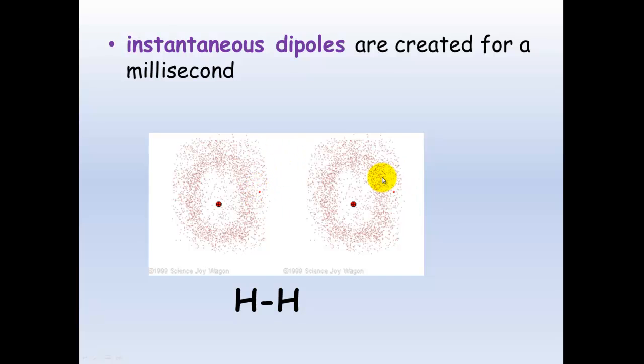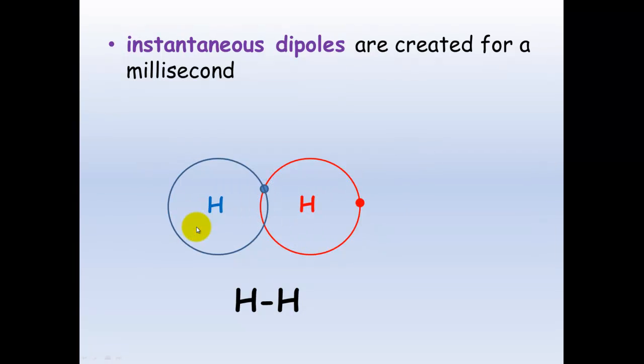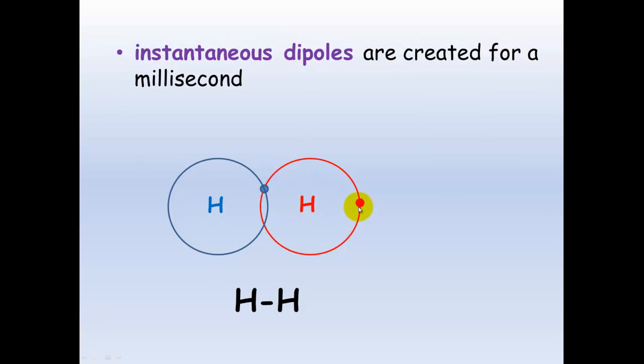Which means that the negative is on this side of the molecule, which creates a very slight positive on this side of the molecule. And this is what we're talking about. We've got the electrons on this side here, which creates a delta negative on this side of the molecule and a very slight delta positive on this side of the molecule. But this allows the attraction between different molecules.